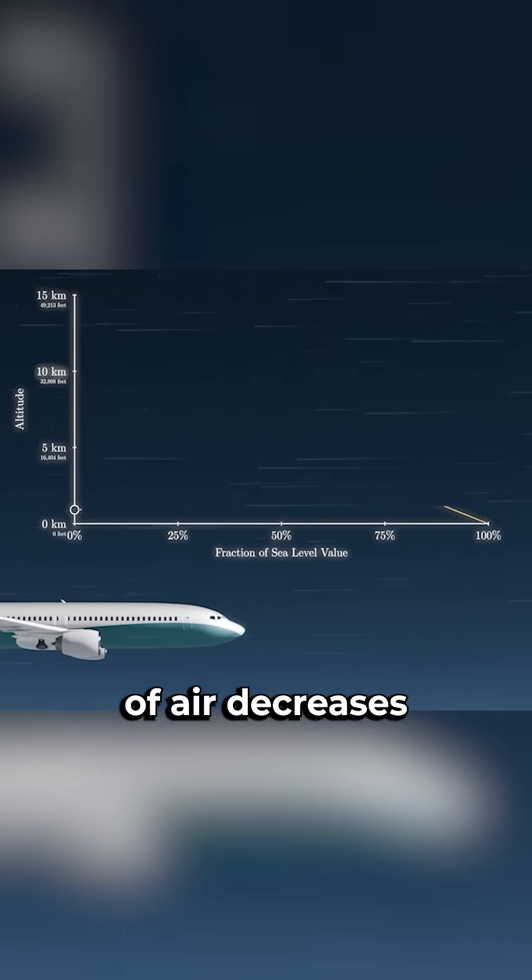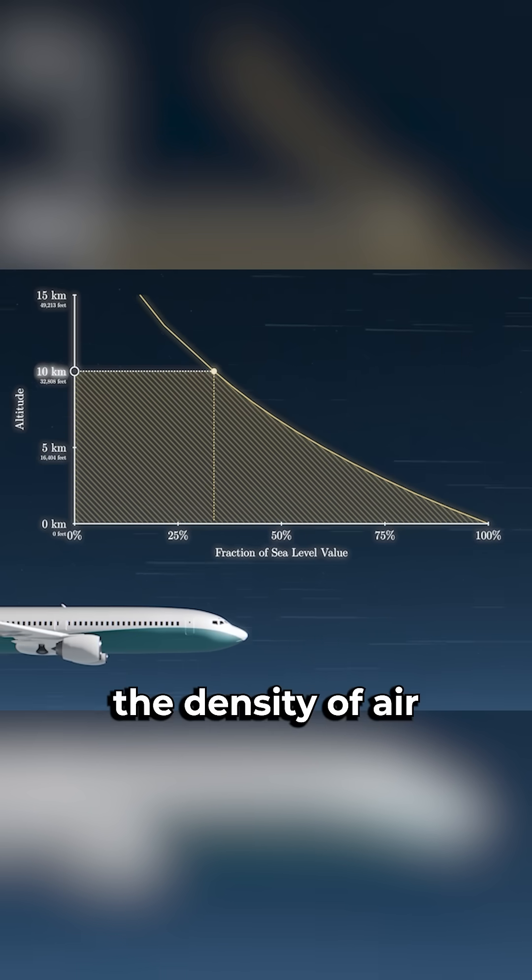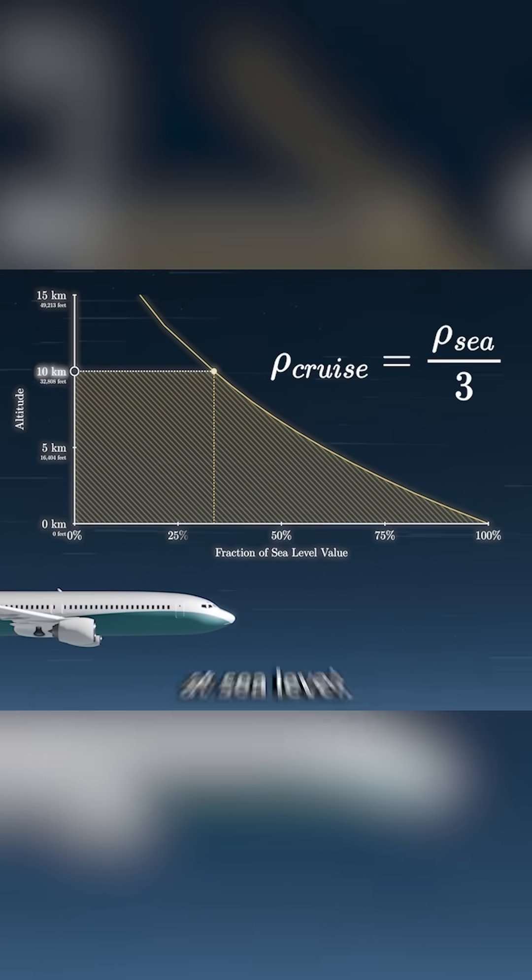As you go up, the density of air decreases. And at 33,000 feet, or 10 kilometers, the density of air is just a third of what it is at sea level.